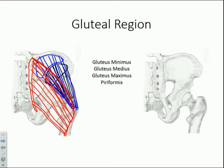Next is the piriformis, shown in the right-hand diagram in black. Piriformis means pear-shaped, giving you an idea of what it looks like. The majority will not be visible, as it comes off the internal surface of the sacrum and the sacrotuberous ligament from the internal aspect. From there, the fibers quickly converge as they exit the greater sciatic foramen and attach along the upper border of the greater trochanter of the femur.